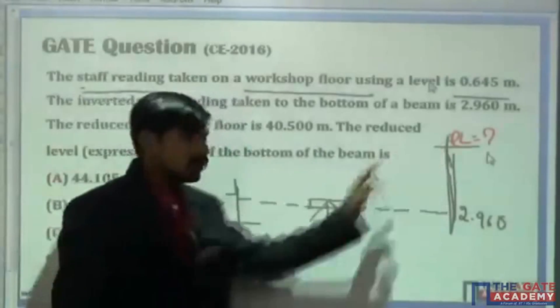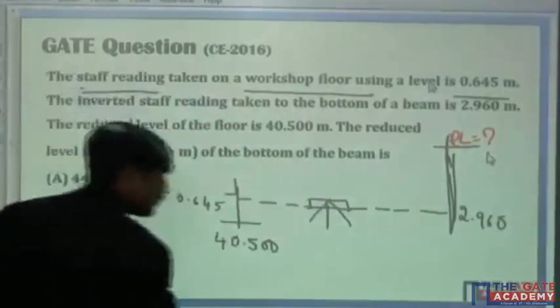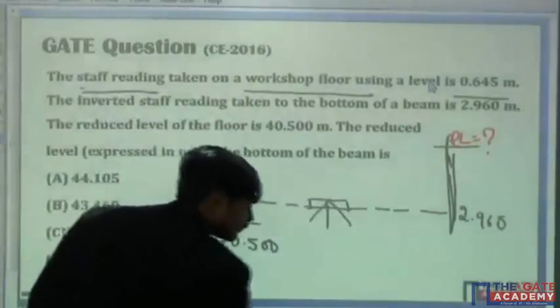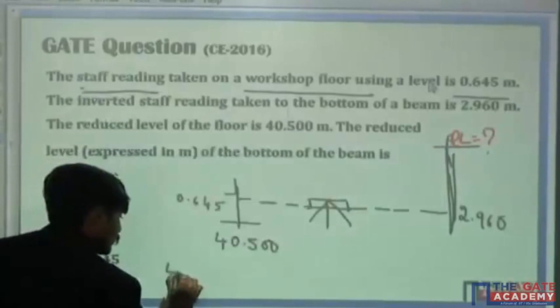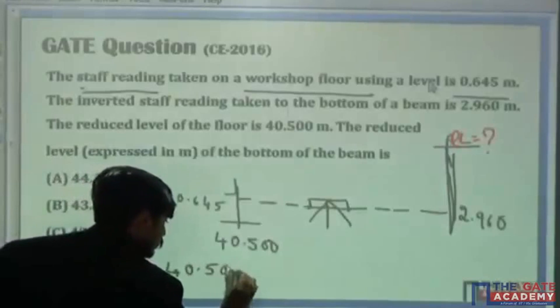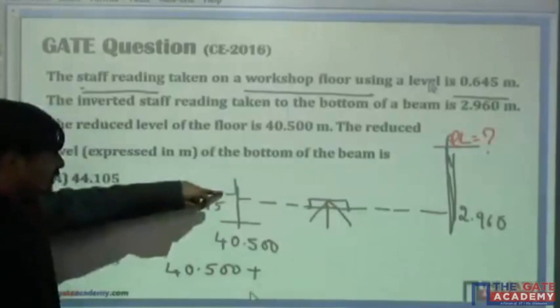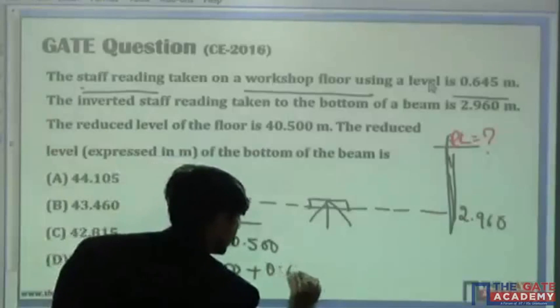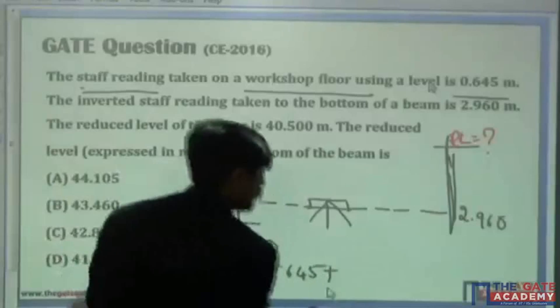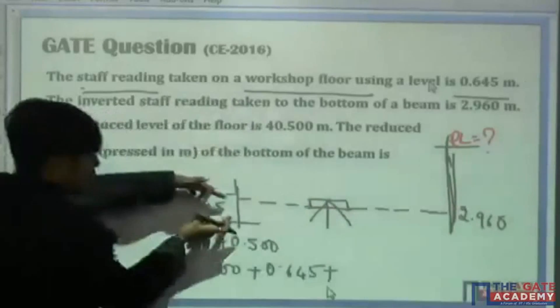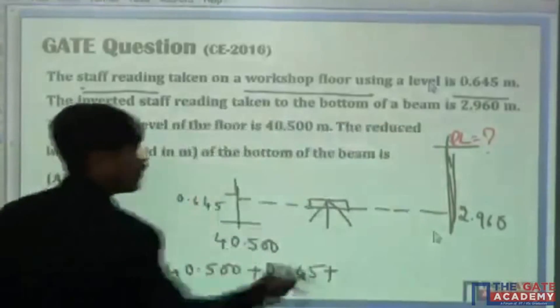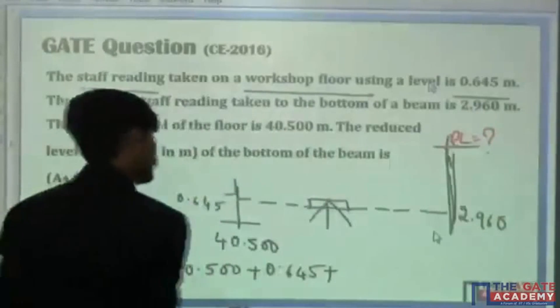But I am going to show you very simple method in surveying. If you draw diagrams, many problems you can solve without remembering the formula itself. Now, see, what will be RL here? So, 40.500 plus this height plus this height. This height plus this height plus this RL. What you are going to get is this RL itself.